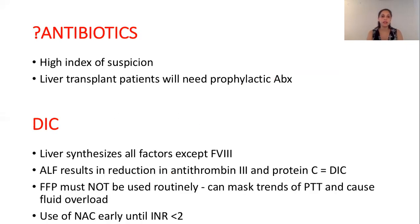Antibiotics are not given routinely but are used if there is a high index of suspicion, and patients going for liver transplantation receive prophylactic antibiotics. Tazocin can cover both gram-positive organisms such as Staph aureus and gram-negative such as E. coli. Fluconazole can be given for fungal infections like Candida. There is a risk of DIC: the liver synthesizes all clotting factors except factor VIII, and liver failure causes reduction in antithrombin III and protein C, pushing the patient into DIC. Do not give FFP routinely as it risks fluid overload and masks trends in PTT, which are important prognostic indicators. Use NAC early until the INR is less than two.